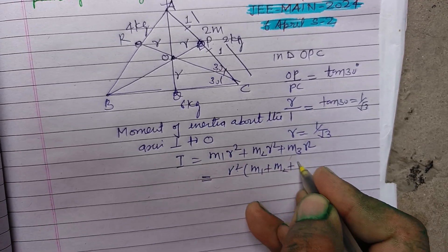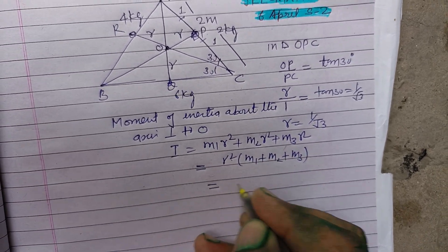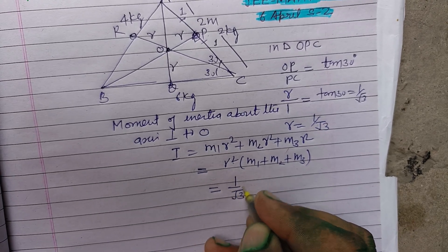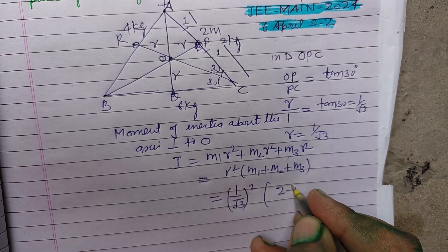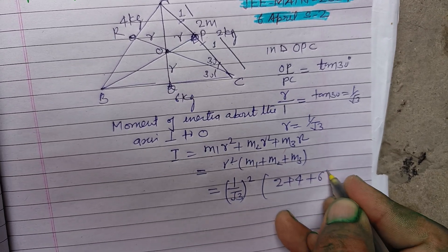And R is 1 upon root 3 whole square. M1 is 2, M2 is 4, M3 is 6.